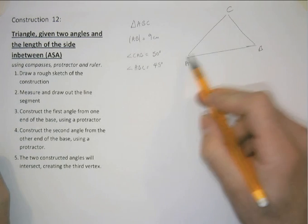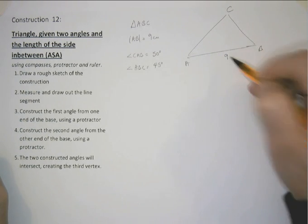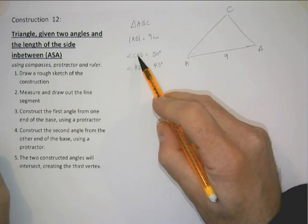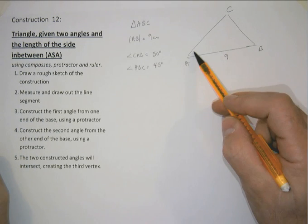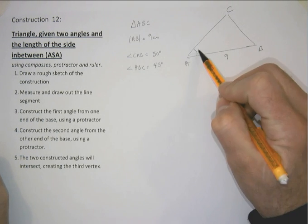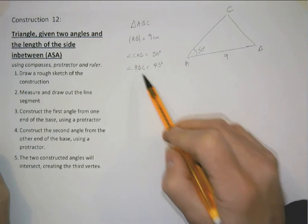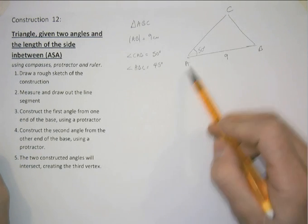OK, so the side AB is 9cm, the angle of CAB, so CAB, i.e. this angle here that's created is going to be 50 degrees. And angle ABC, so ABC.